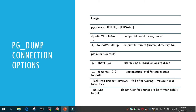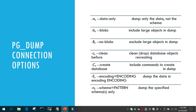The -f option stands for the file name — you can mention the file name or the directory location. The -F option stands for the format, so you can mention custom format, directory format, tar format, or plain text. You can mention the number of jobs in case you want to parallelize your backup. For tar backup you can compress it using the -Z option, or --compress with a value from 0 to 9, where 0 is no compression and 9 is the highest compression level. You can also mention the lock wait timeout.